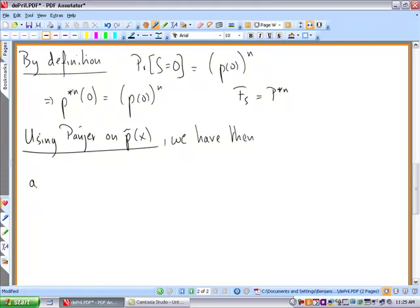We need to calculate a and b in case of a binomial. So a is minus p over one minus p.